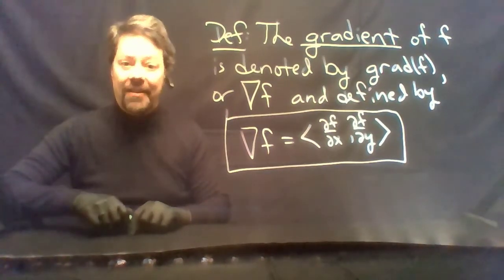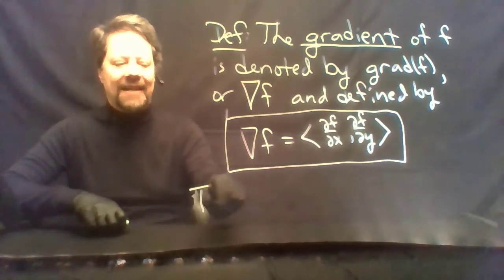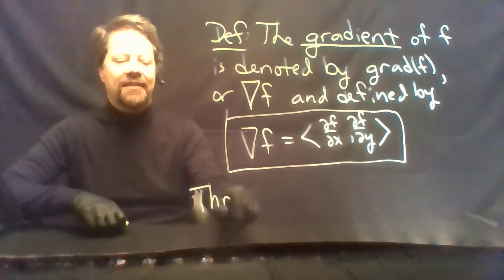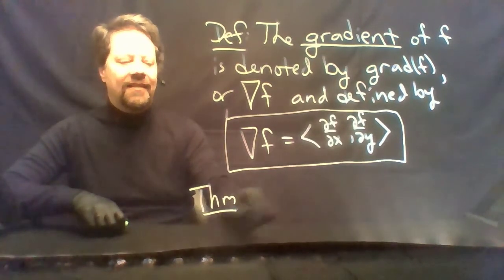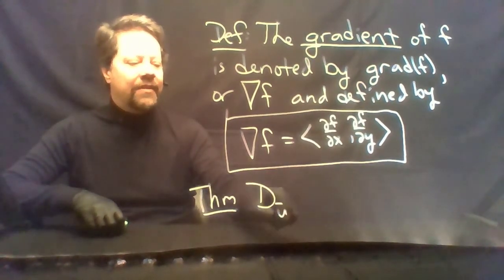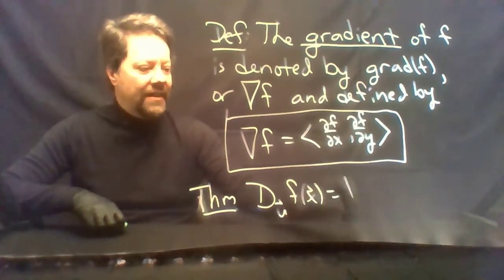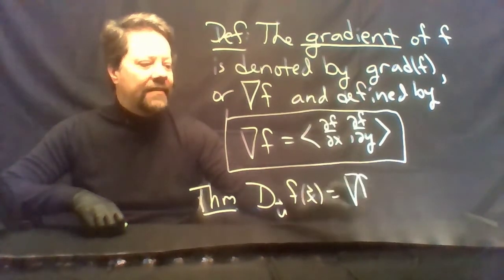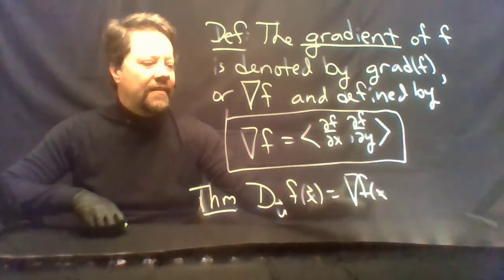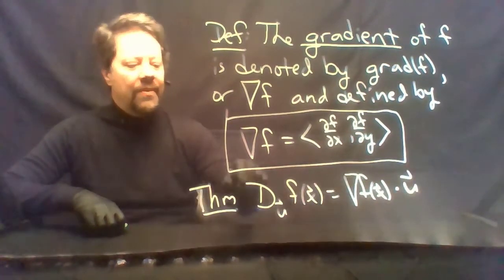The theorem — really an observation from our last calculation — is that the directional derivative is the gradient dotted with the vector u.